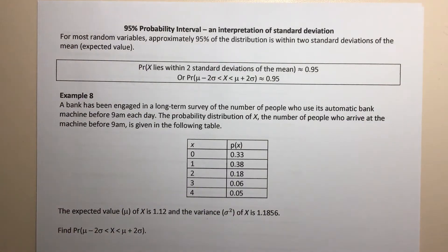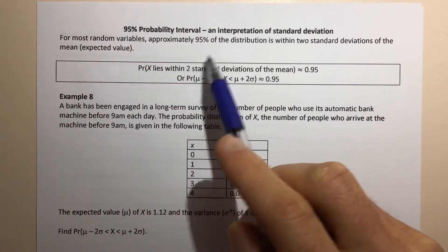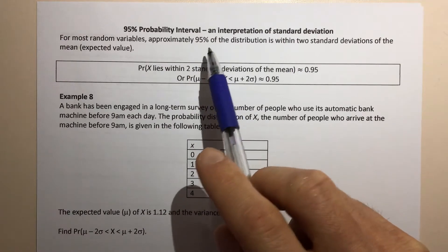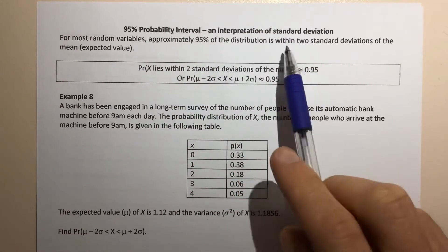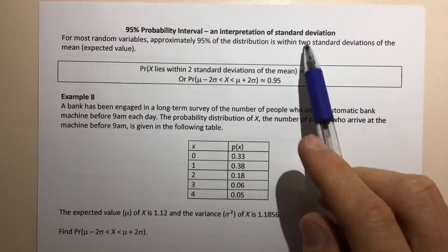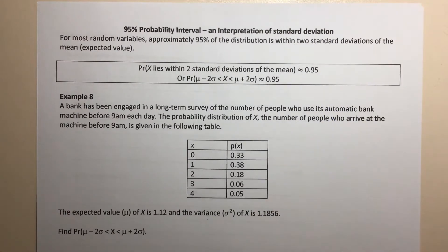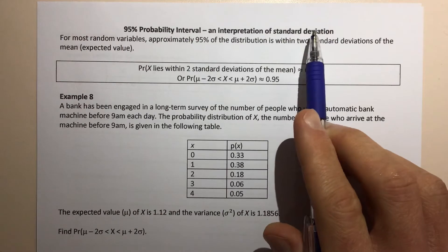Hey there Method students. This is the last part of section 13D. In this section we look at a couple of different ideas. The first one is this 95% probability interval, which is a common interpretation of standard deviation. We saw before that standard deviation is a measure of spread, and we calculate it using the square root of the variance.